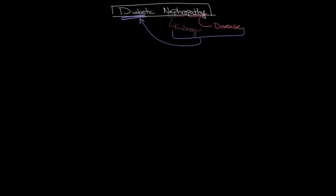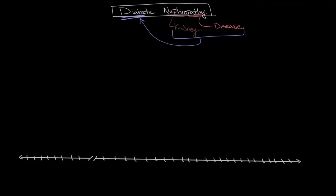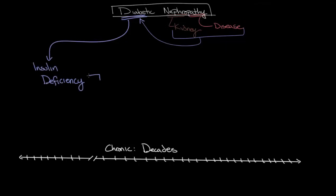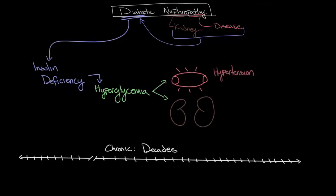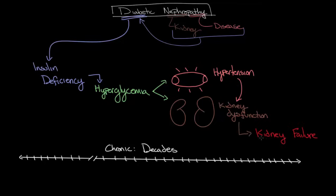In this tutorial, let's talk about the mechanism underlying the cause of diabetic nephropathy and how individuals with diabetes develop the condition. Diabetic nephropathy is a chronic complication of diabetes mellitus, meaning it usually has a slow progression over decades after the initial diagnosis. An insulin deficiency due to diabetes results in hyperglycemia, which then causes hypertension and kidney dysfunction. This kidney dysfunction is further worsened by the hypertension, ultimately resulting in kidney failure, which can have very severe and potentially life-threatening complications such as anemia, electrolyte imbalances, metabolic acidosis, and heart arrhythmias.